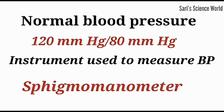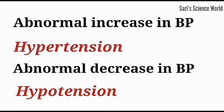Abnormal increase in blood pressure is known as hypertension, and abnormal decrease in blood pressure is known as hypotension. Hypertension is known as the silent killer.